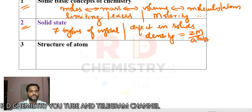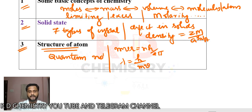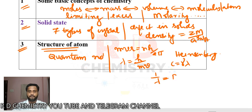On day 3, study the structure of atoms. Concentrate highly on quantum numbers — very important. Also remember the angular momentum formula: mvr = nh/2π. Then the de Broglie equation: λ = h/p, where momentum p = mass × velocity. Learn the Heisenberg uncertainty equation. Other important formulas: c = νλ, and the Rydberg equation: 1/λ = Rₕ(1/n₁² − 1/n₂²), used for Lyman and Balmer series to calculate wave number or wavelength.